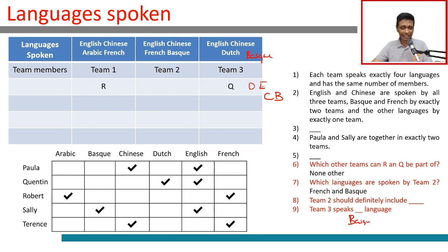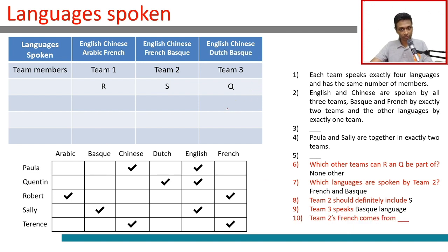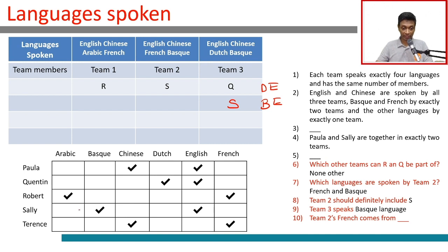Team 2 speaks English, Chinese, French, and Basque. Only one person speaks Basque — that is Sally — so Sally must be in team 2. Team 3 also speaks Basque, so Sally must be in team 3 as well. Quentin brings Dutch and English to team 3, but we still need Chinese and Basque, which Sally provides. Paula can bring Chinese to team 2, but not Terence, since Terence would also bring French — an extra language we don't want.